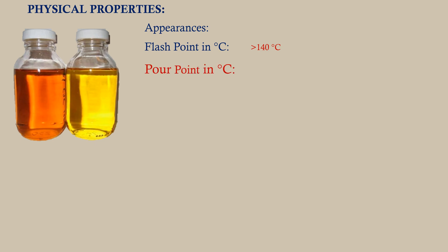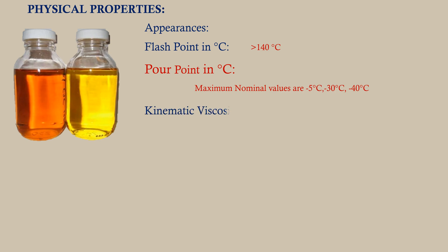Pour point in degree centigrade: the pour point is the temperature below which the transformer oil loses its ability to flow. Below the pour point, oil stops convection flow, and thus proper cooling may not occur.